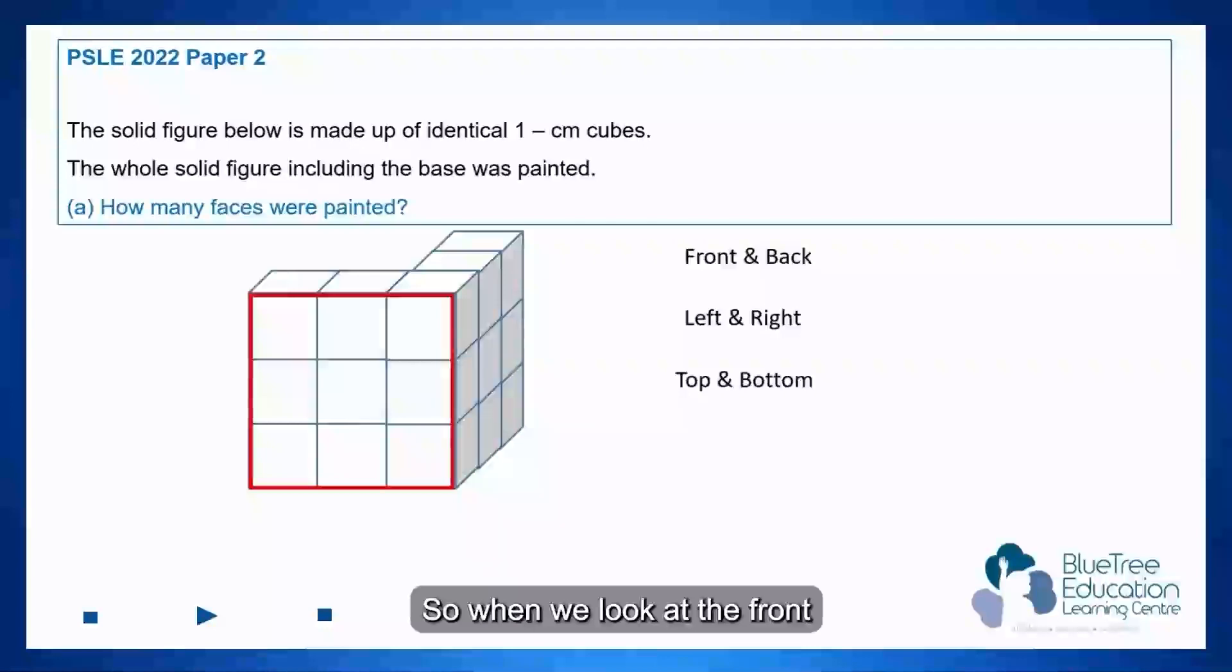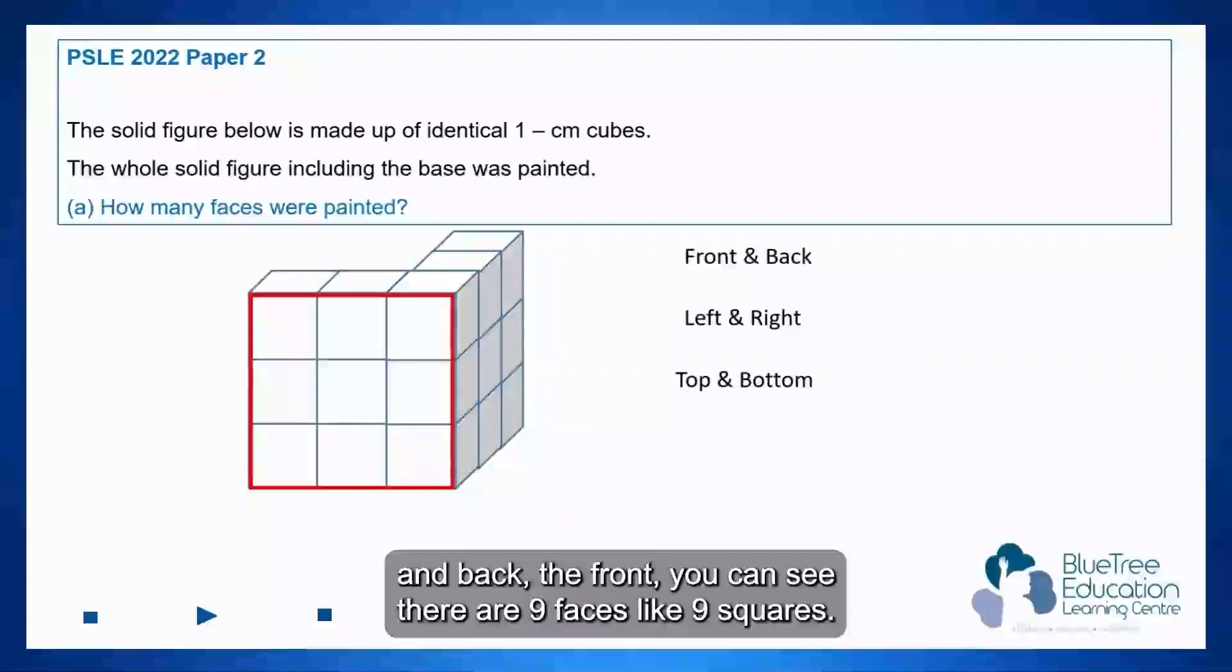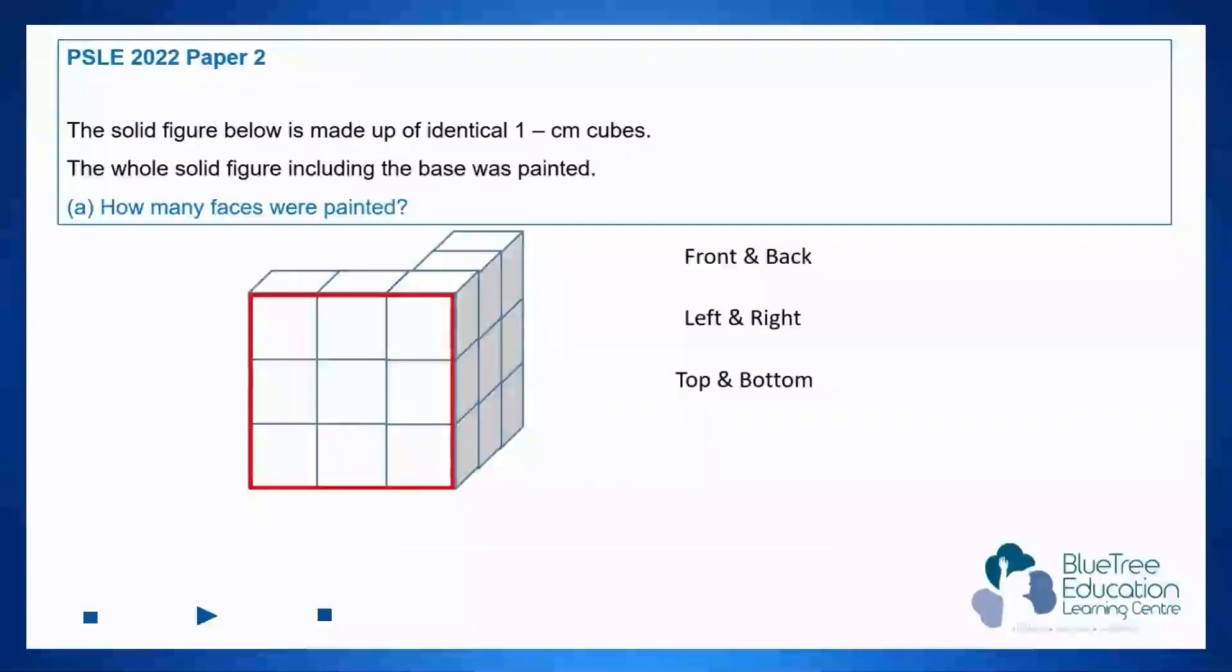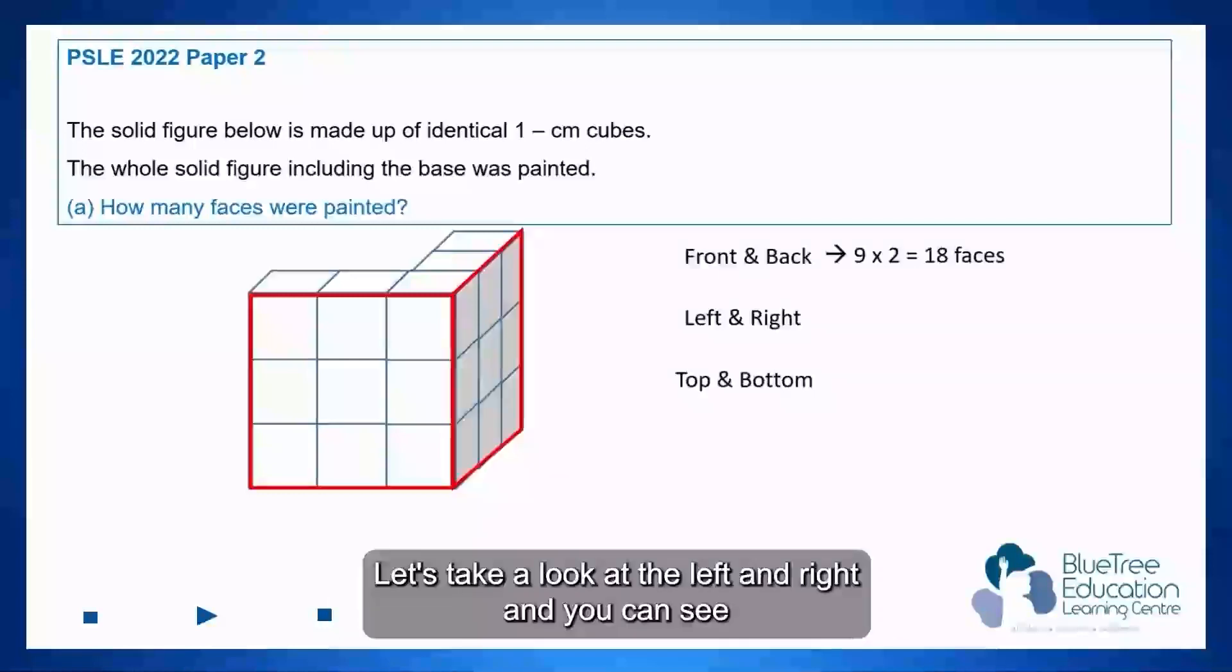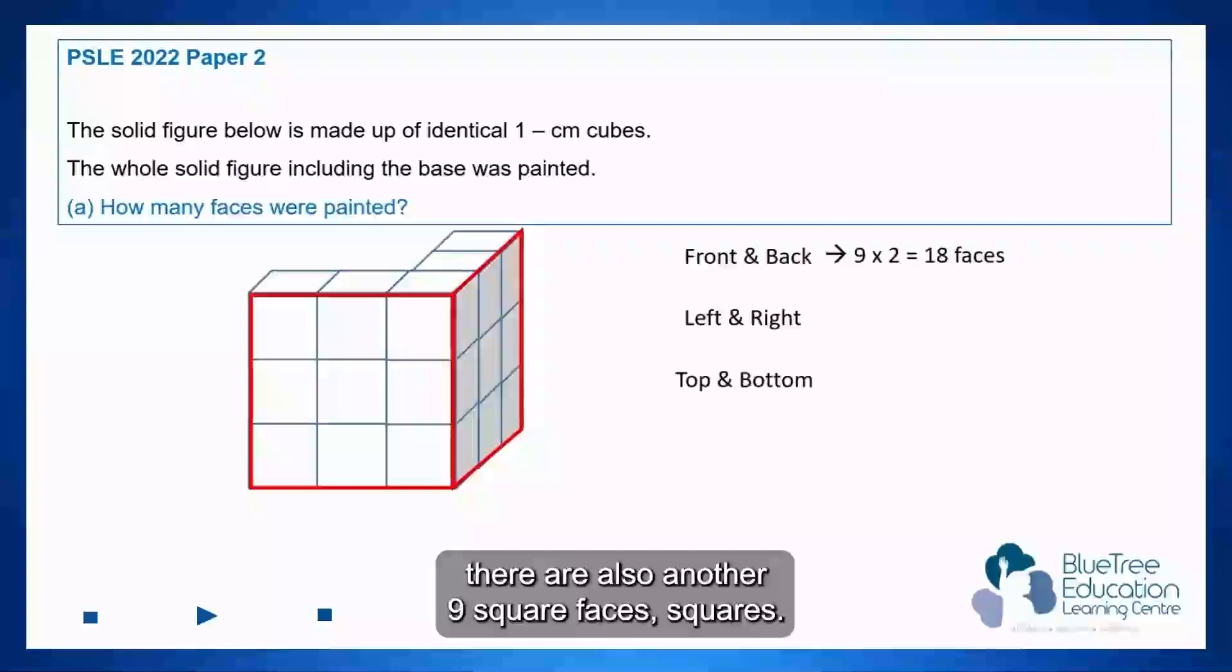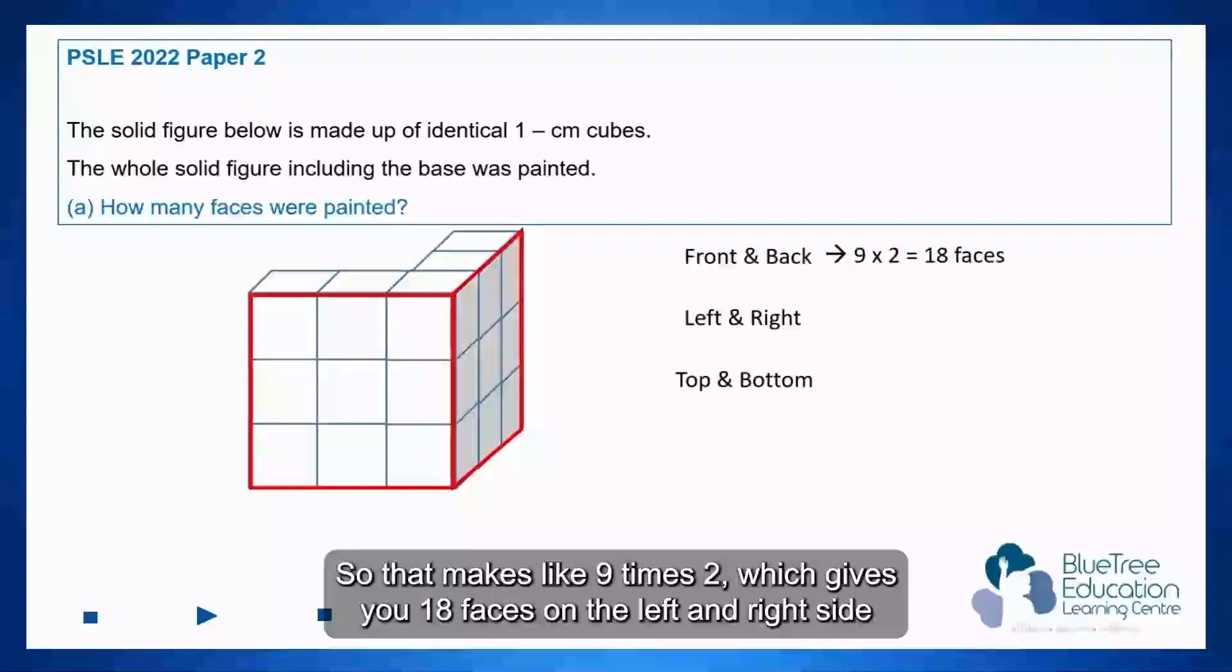When we look at the front and back, you can see there are nine faces like nine squares. So the back would also have nine as well. So we'll take 9 times 2 which is 18 faces. Let's take a look at the left and right. You can see there are also another nine square faces. So that makes like 9 times 2 which gives you 18 faces on the left and right side.